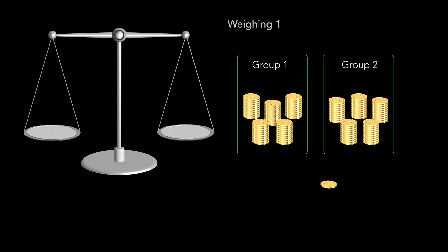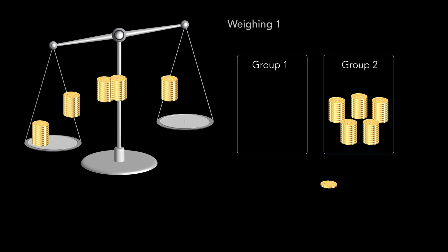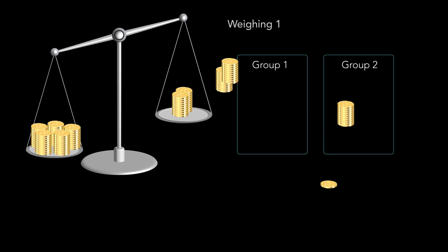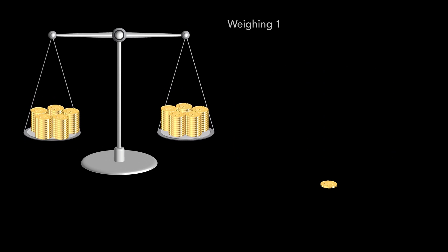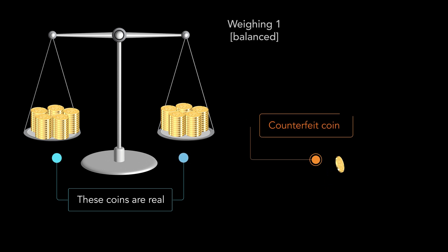Let's compare the weight of the 2 groups of 50 coins. Placing these 2 groups on the scale gives us 2 possible outcomes. If the scale stays balanced, then all the coins on the scale are real and the remaining coin that isn't on the scale is counterfeit.